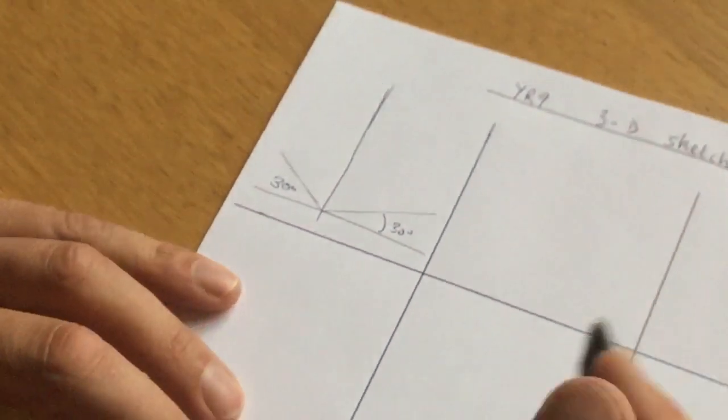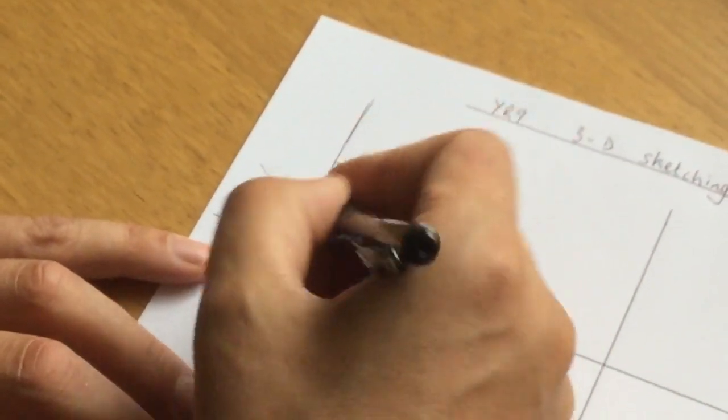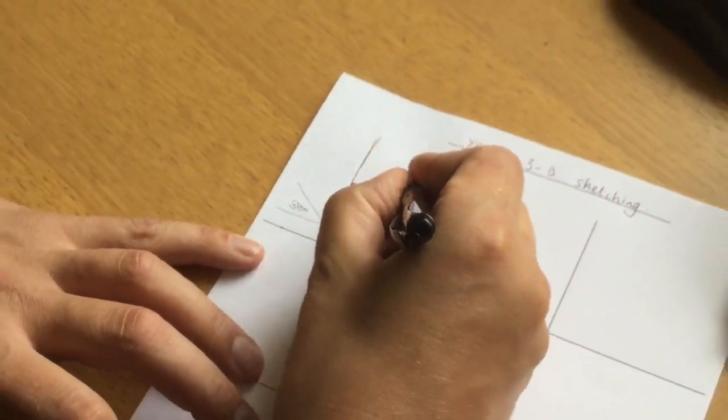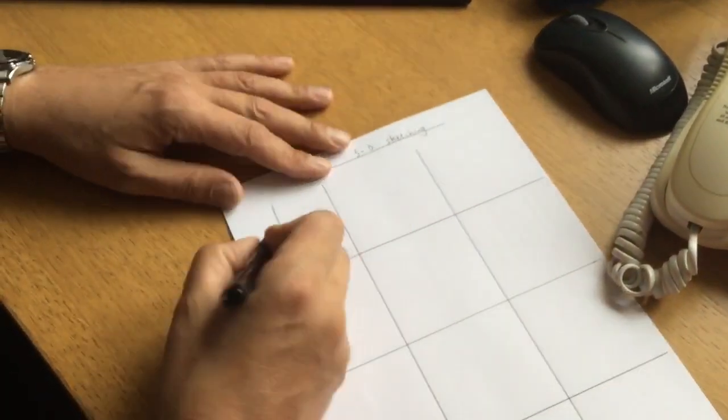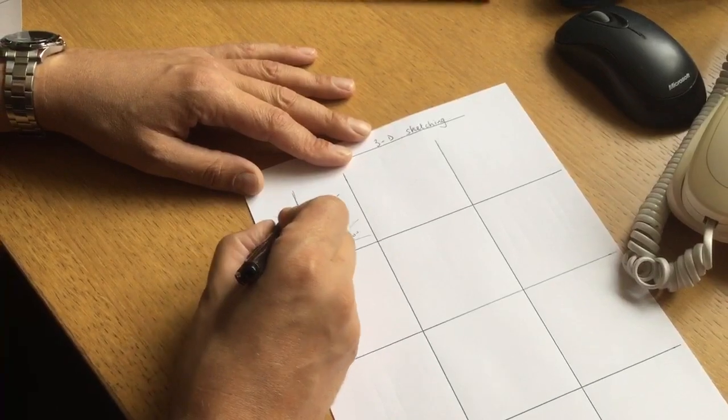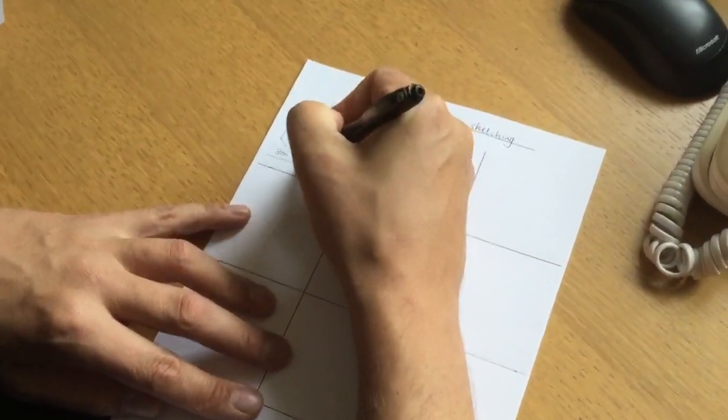We're just going to do a cube, so come up the same dimension as you go out. I'm not going to measure it, I'm just going to do freehand sketching. I'm just getting into the way of doing it. Vertical lines are always vertical.